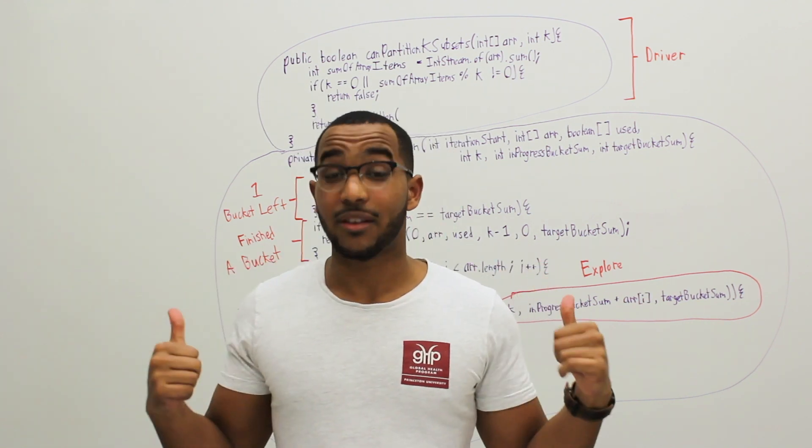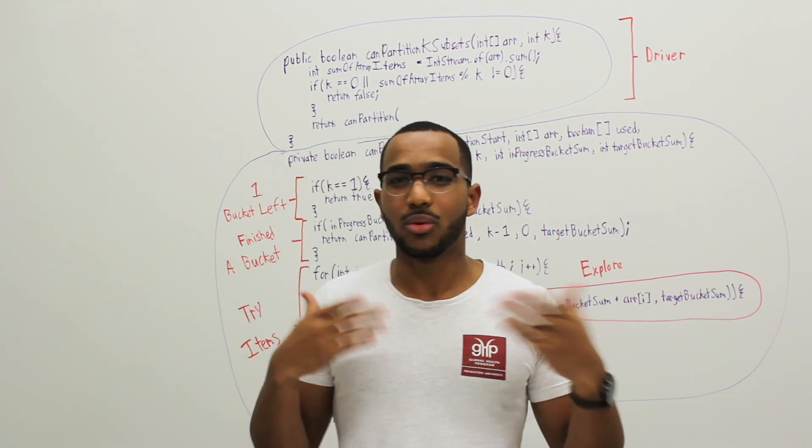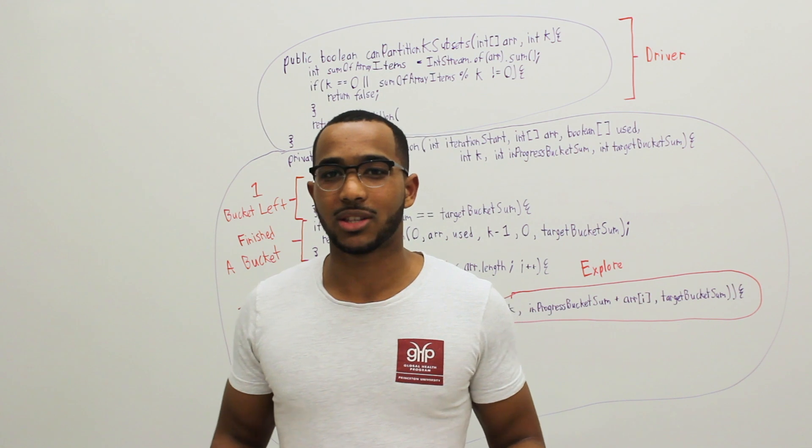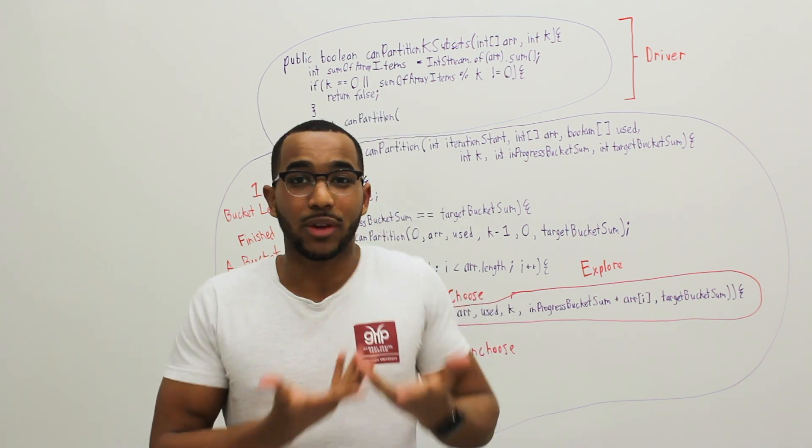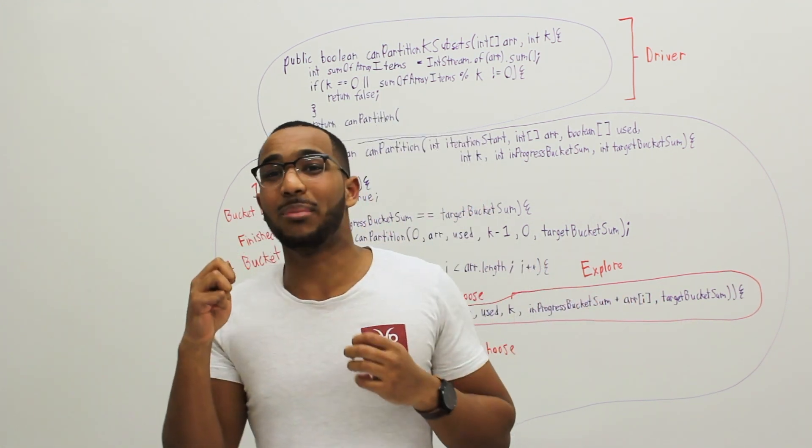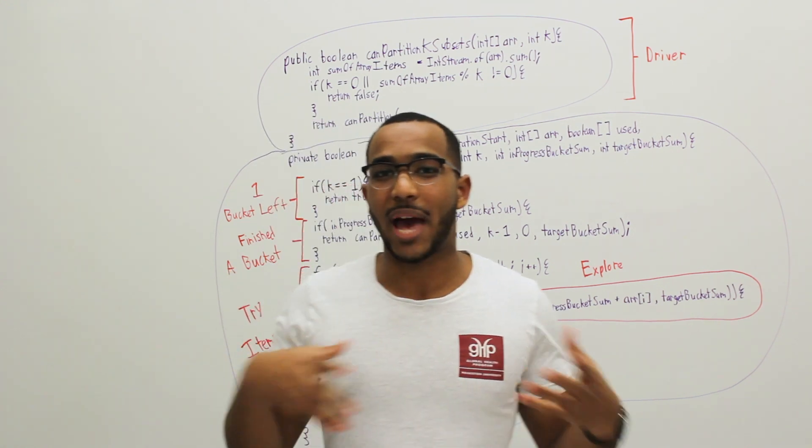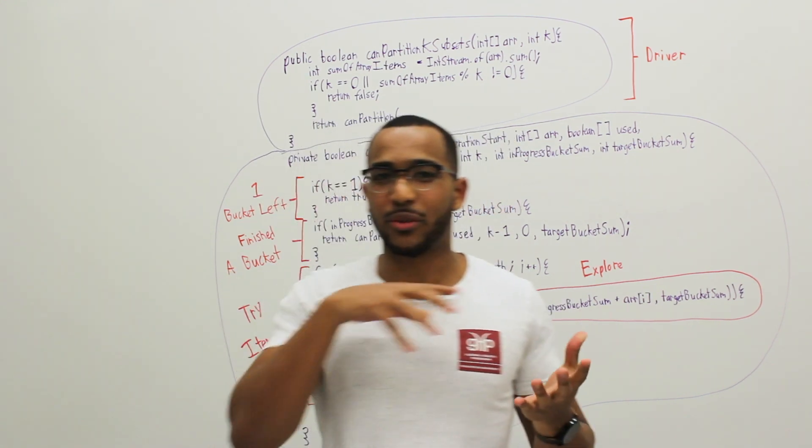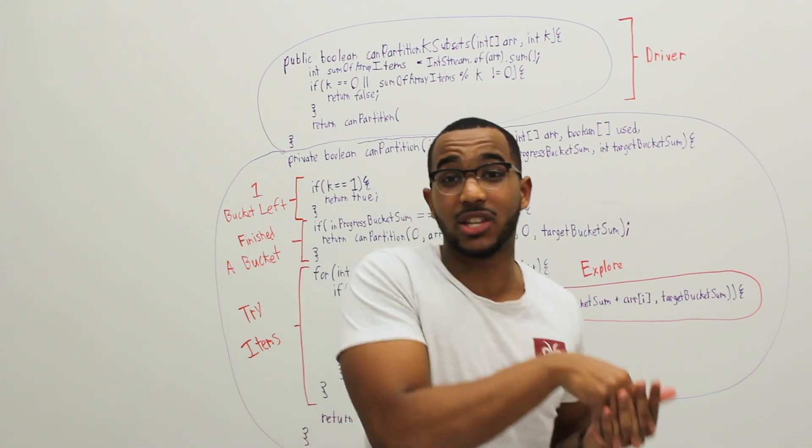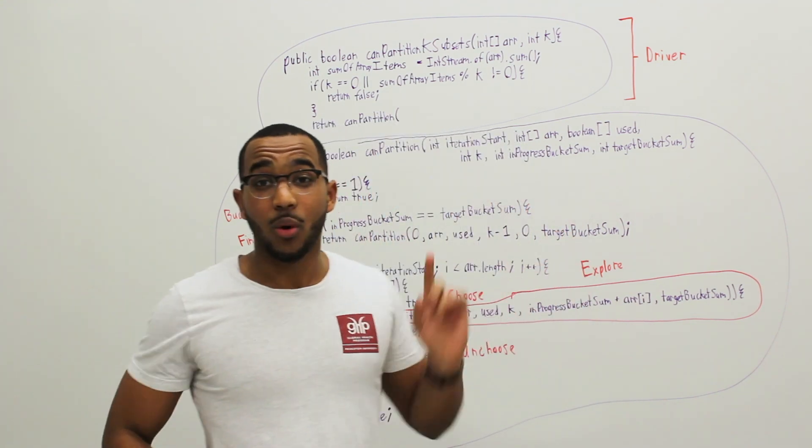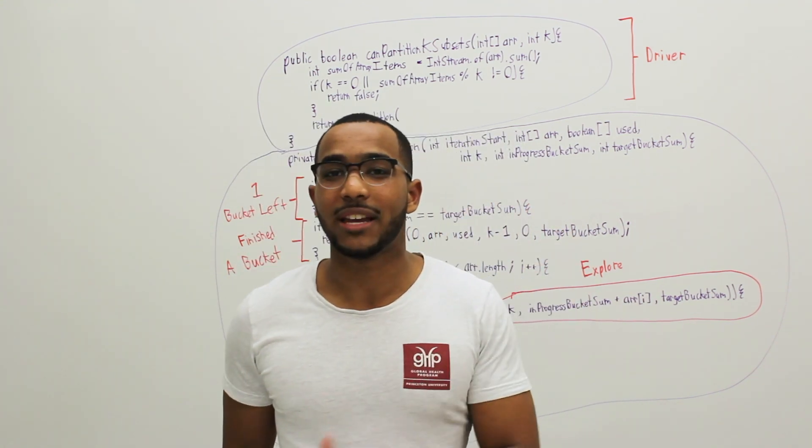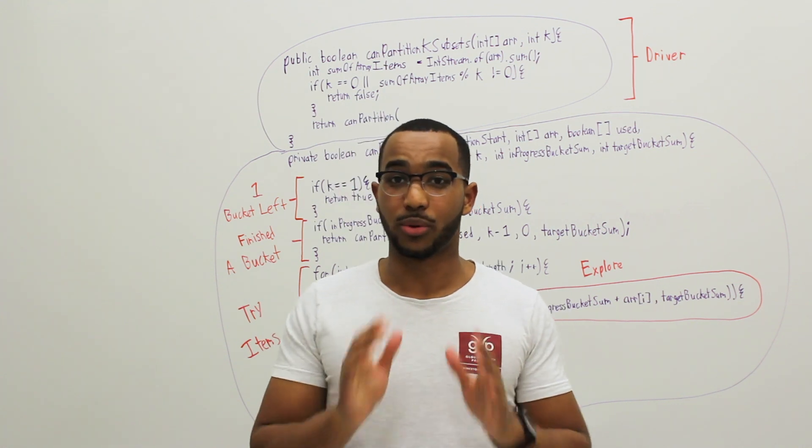We're going to be simulating filling buckets here. But you could explicitly create the buckets and use space and create those buckets and place items. Backtrack if we can't place any more items and we have a bad positioning or if we find ourselves in a position where we can't continue, backtrack. In this algorithm, what we're going to do is we're going to simulate filling buckets. So let's walk through the code now.